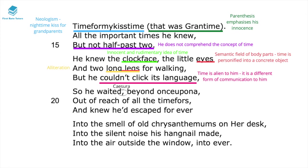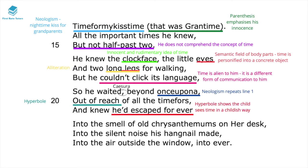The caesura after 'so he waited' lengthens the feeling of time as he waits for an indefinite period. The neologism 'beyond once upon a' repeats the fairy tale opening of line one, emphasising the child's young innocence. 'Out of reach of all the time' is hyperbole showing just how long this wait feels — for those who understand time it's probably a brief detention, but for this child it feels out of reach even for their own comprehension.